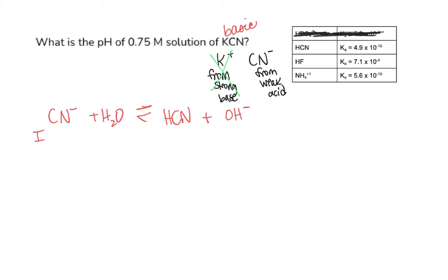Now you're just going to set up your ICE chart. So there's my ICE chart. Now this is producing hydroxide so we need a Kb. If you look up in this chart we do have a Ka for HCN but we need to convert that into a Kb.